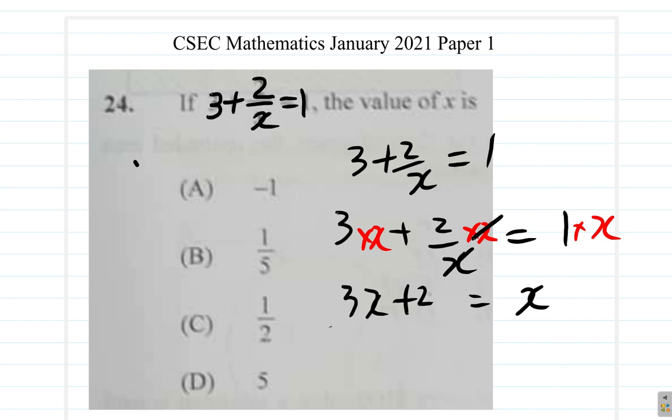You take 2 from the left and take 2 away from the right. And you're going to have 3x. 2 minus 2, that's done. Equals x minus 2. See that?